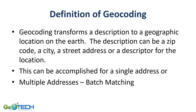The definition of geocoding is all about taking a description and applying it to a geographic location. This can be a zip code, a city, or a street address. We're going to look specifically at geocoding using street addresses. This can be done with a single address or a whole table of addresses, and we define this as batch matching.